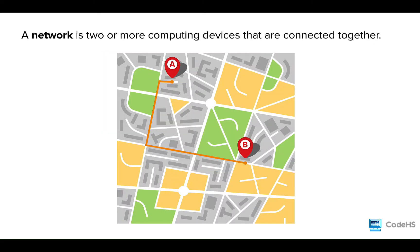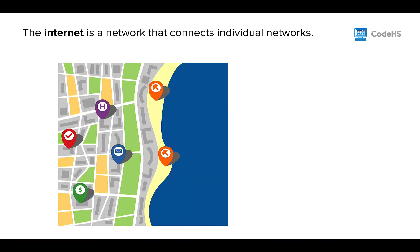So, what's a network? A network is like a roadway. There is a path that connects one device to the other. A network is two or more computing devices that are connected together. The Internet is a network. It connects different individual networks to each other through a number of different pathways. So, the Internet is a network of networks.